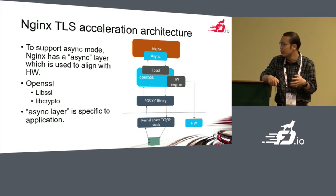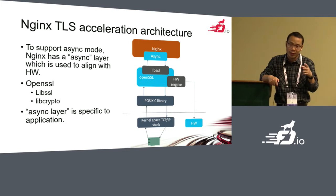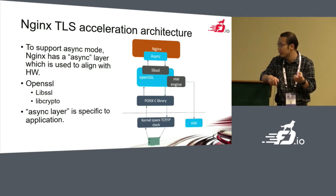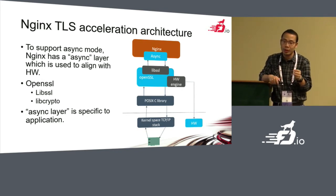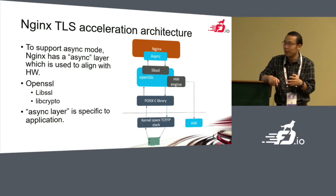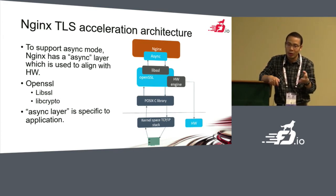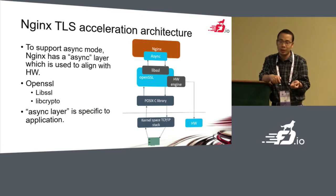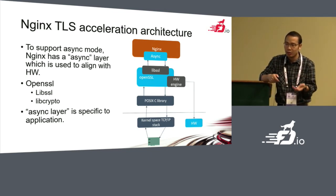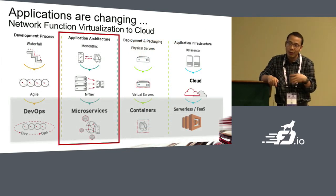This is the Nginx TLS acceleration architecture we previously did. This work has enabled many customers — for example, for gateways where customers want to accept a large volume of connections. We enabled TLS in the Nginx side. Since we want to enable async mode, we added a new module on the application side. Nginx has a layer of the OpenSSL event, and we added something to the event module so it can talk with the hardware. This model can boost performance, but it requires changes to the Nginx side.